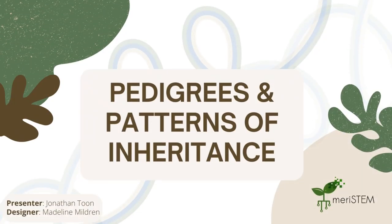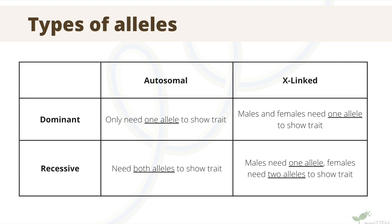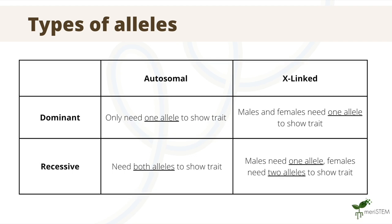Today, we are going to go through some more examples of pedigrees and how we can use them to work out the pattern of inheritance of a particular allele. We have talked about how alleles can be dominant or recessive, but we have not discussed how these alleles can be found on autosomal chromosomes or on X and Y chromosomes.